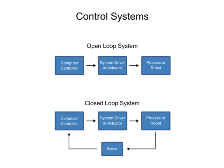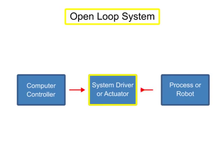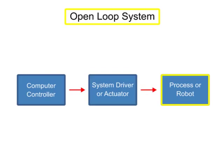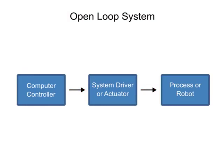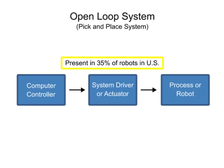There are different types of control systems used in robotics. In open-loop control, the computer sends signals based on the current state without taking into account feedback from the system. This type of system is also called non-servo, or pick and place, and is used in about 35% of the robots in the United States.